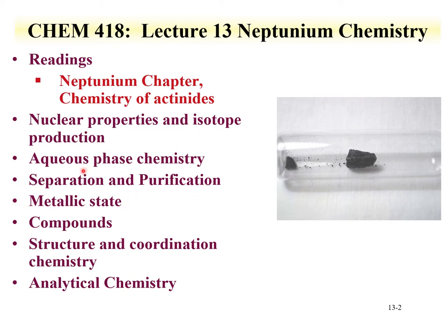We'll discuss the metallic state of neptunium and we'll talk about the different phases — we'll see that it's becoming more complex in terms of phases. We'll talk about neptunium compounds that have been synthesized and characterized. We'll go into structure and coordination chemistry. The role of coordination chemistry in terms of oxidation state is an ability to explore some of the f-electron properties. And then we'll end this lecture discussing the analytical chemistry of neptunium — how one can determine neptunium concentrations and what different methods can be used.